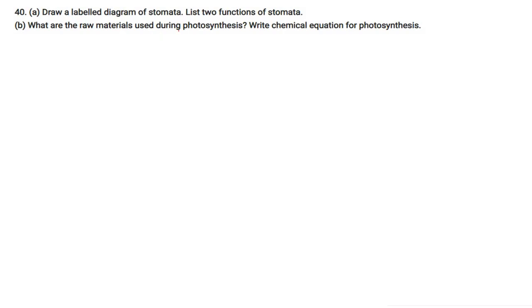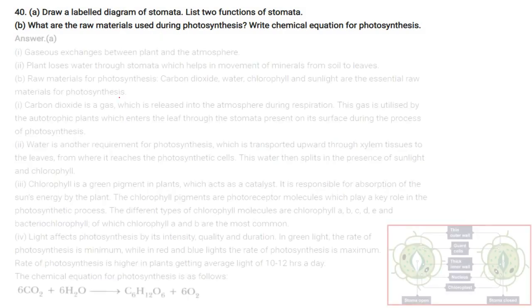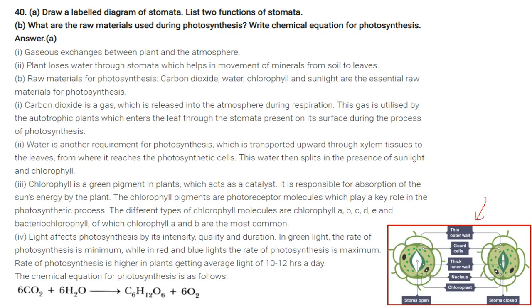Draw a labeled diagram of stomata and list two functions. The diagram shows the open and closed stoma with guard cells, thin outer wall, thick inner wall, nucleus, and chloroplast. Two functions of stomata: gaseous exchange between the plant and the atmosphere; and plants lose water through stomata (transpiration), which helps in movement of minerals from soil to the leaves.